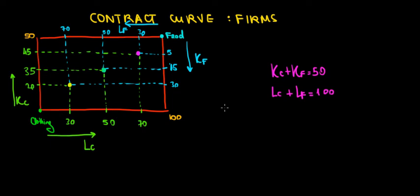In other words, we're interested in the points of this Pareto optimality. We're interested in the points where the indifference curves between the companies are going to be tangent to each other.